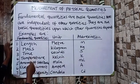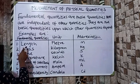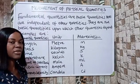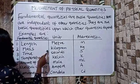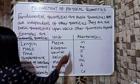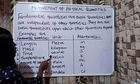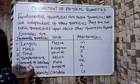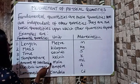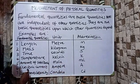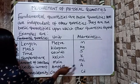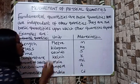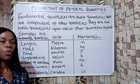Examples of fundamental quantities: Length — unit is meter, abbreviation m. Mass — unit is kilogram, abbreviation kg. Time — unit is seconds, abbreviation s. Temperature — unit is kelvin, abbreviation K. Amount of substance — unit is mole. Electric current — unit is amperes, abbreviation A. Luminous intensity — unit is candela, abbreviation cd.